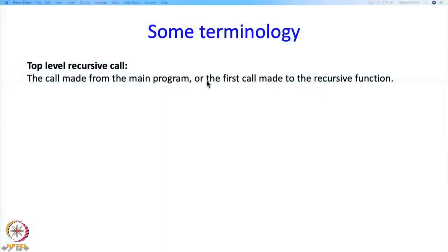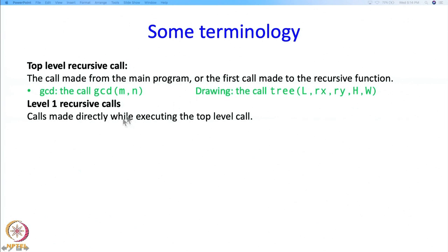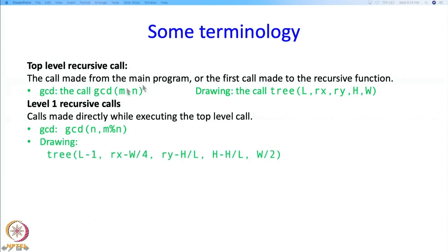I will now introduce some terminology. The top-level recursive call is the call made from the main program — the first call made to the recursive function. For GCD, the top-level call is GCD of M and N. For drawing, it is the call identified by the signature of the function. Then there are level-1 recursive calls — these are the calls made directly while executing the top-level call. For GCD, the level-1 call is GCD of N and M mod N. For drawing, there are 2 level-1 recursive calls.